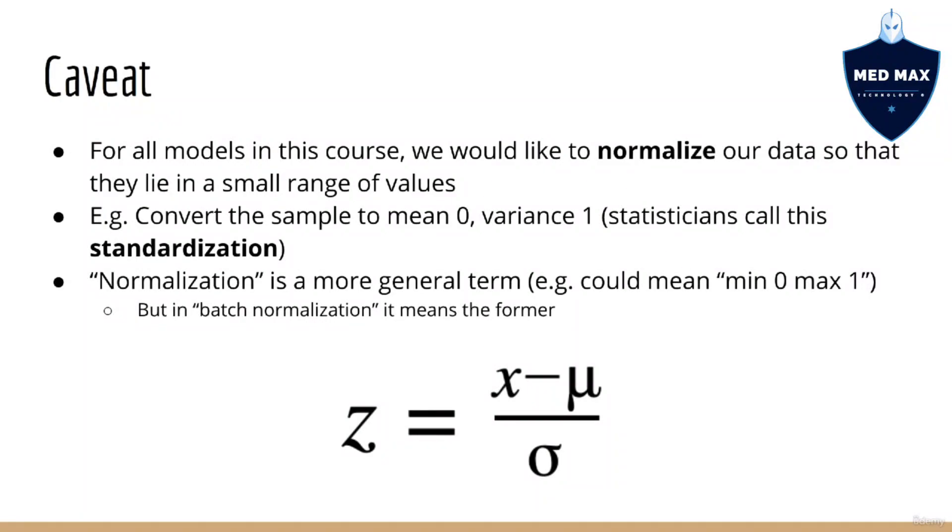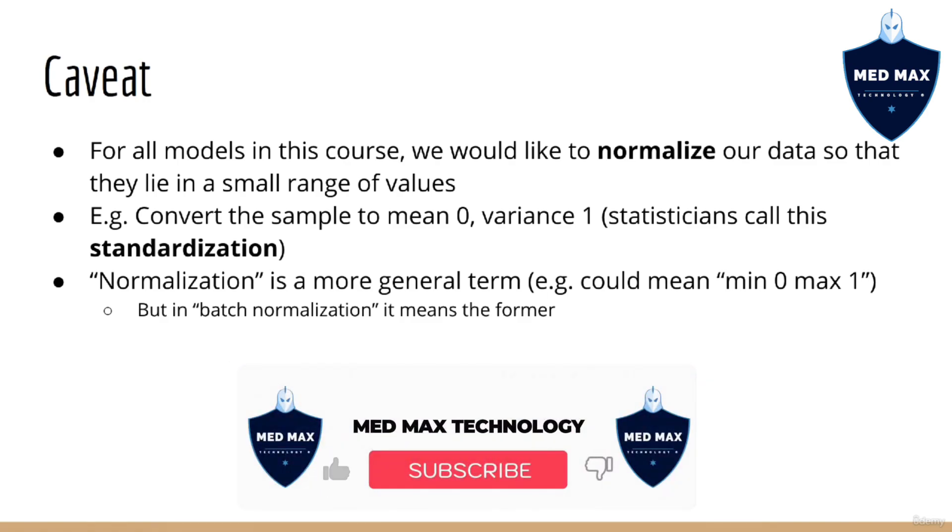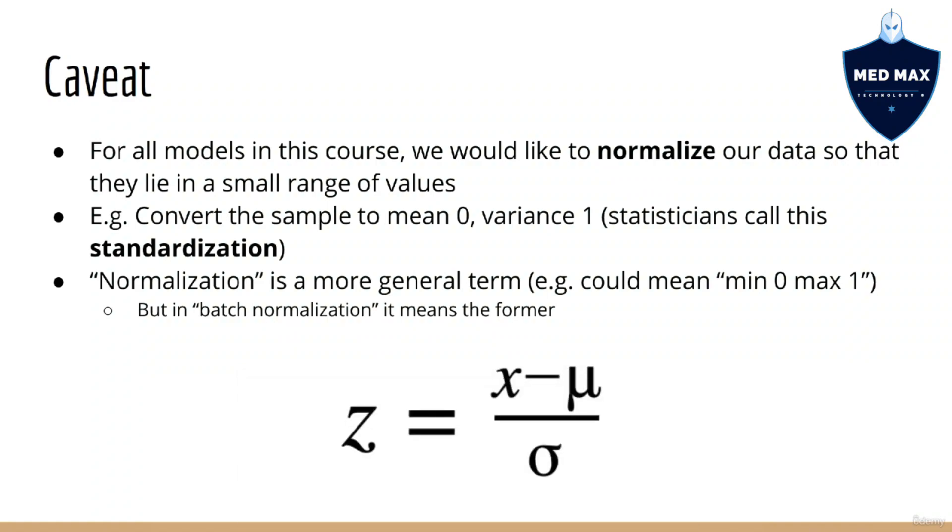There is one caveat to this, which you will see in the following lecture. In order to use linear regression or any other kind of model in this course effectively, you should make sure your data is either normalized or in a small range of values and centered around 0 or at least near 0. In order to do this, we're going to subtract the mean and divide by the standard deviation. This makes it so that the sample has mean 0 and variance 1.